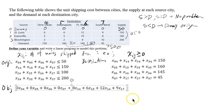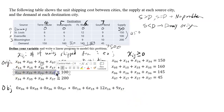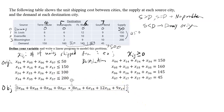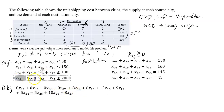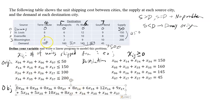The next line for Evansville has coefficients 5, 5, 10, 8 — so 5·X24 + 5·X25 + 10·X26 + 8·X27. And the last one for Bloomington is 3, 2, 9, 10 — so 3·X34 + 2·X35 + 9·X36 + 10·X37.